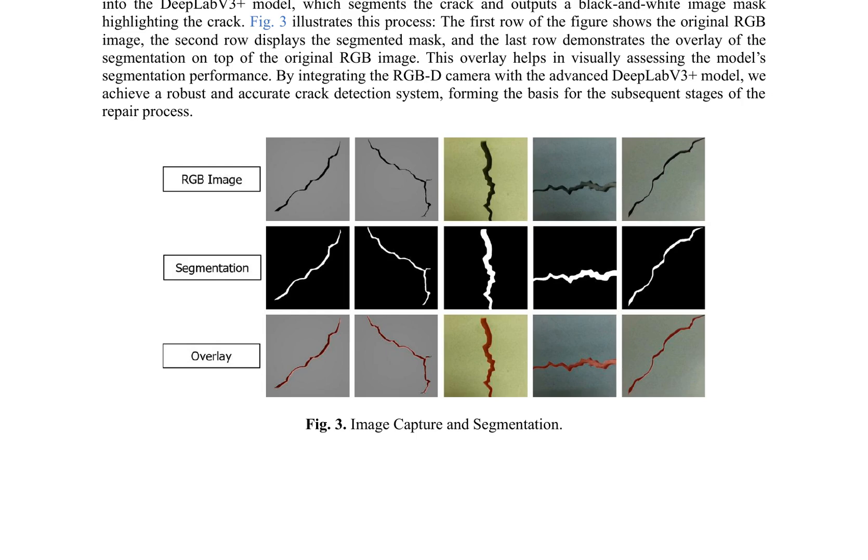These pixel coordinates are transformed from camera coordinates to robot coordinates using the pinhole camera model, as described by equation 5, and the final path is optimized using a heuristic approach.